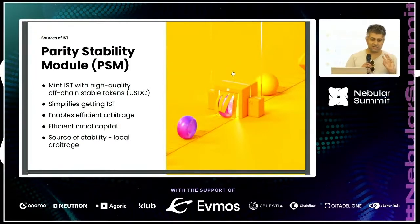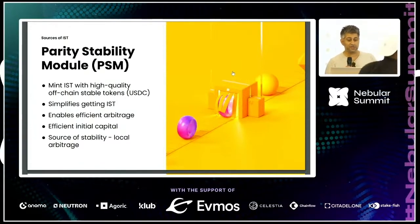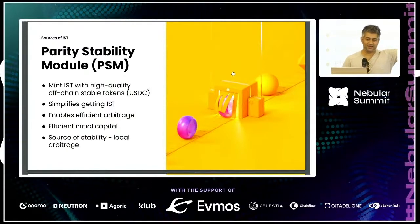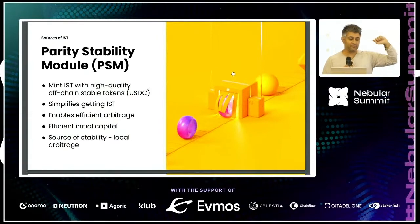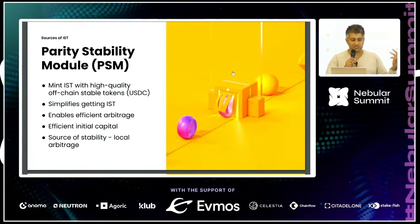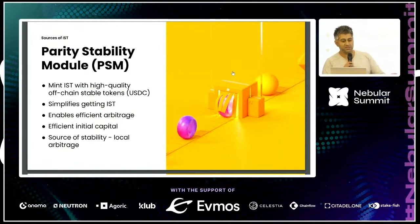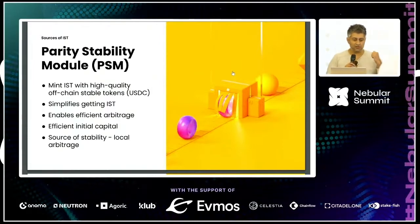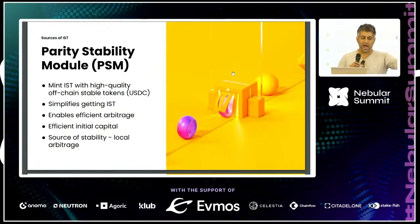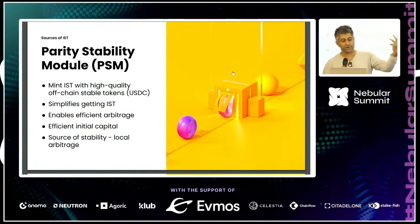The parity stability module is the most difficult thing to understand when designing a stablecoin. We want decentralized stablecoins backed by decentralized assets like ATOM and OSMO. So why do we need to bring in custodial stablecoins? The key insight is that when the market is long, you expect volatile assets to back most of the IST.